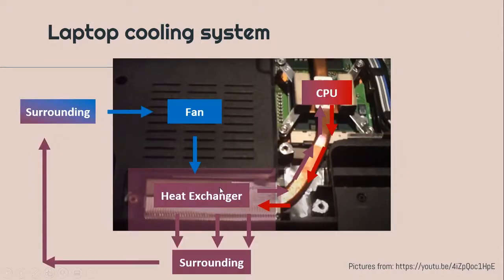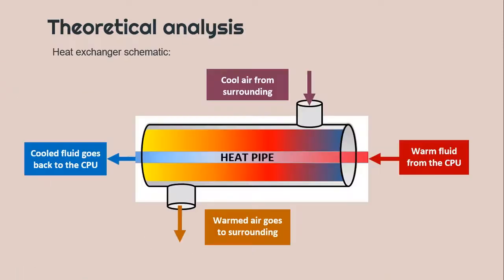The fluid flow will be like this. From this figure, we can see that there is a heat exchange between the hot fluid from the CPU and the cool air from the surroundings. Here is the location where the heat is exchanged. Taking the heat exchanger only, there are two separated flows. The first is the fluid flow inside the heat pipe — from the CPU the fluid gets warm, and when it reaches the heat exchanger, the fluid is cooled down. The second flow is the air from the surroundings: the cool air enters the heat exchanger and exits as warm air because of the heat exchange occurring there.